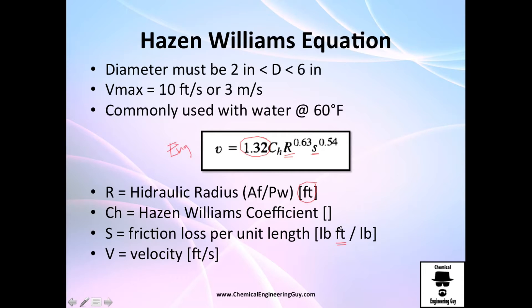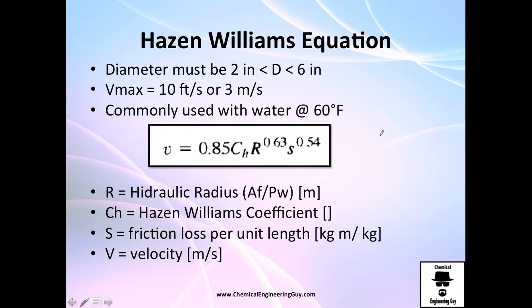Ch is the Hazen-Williams coefficient which you will get from tables depending on the flow. And S is the friction loss per unit length, so essentially h_l.